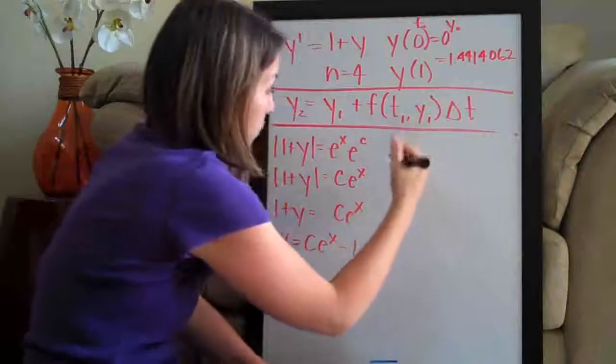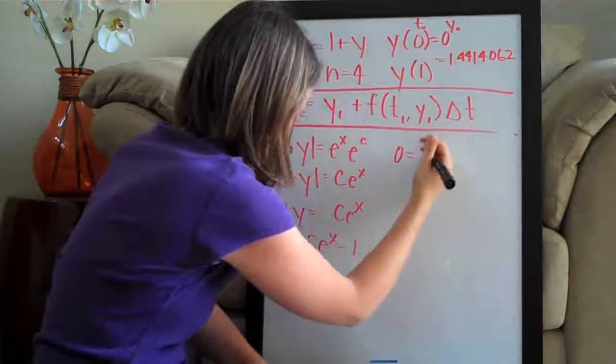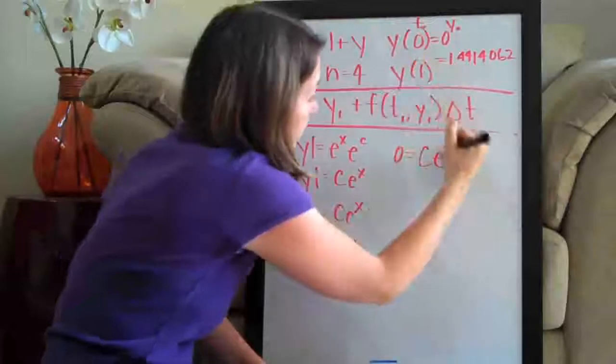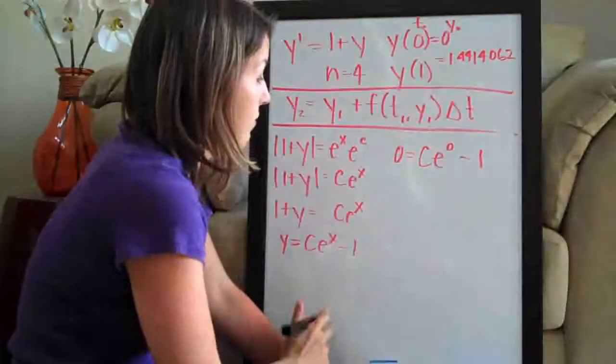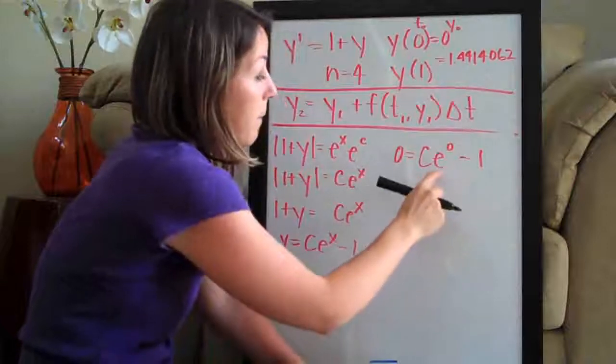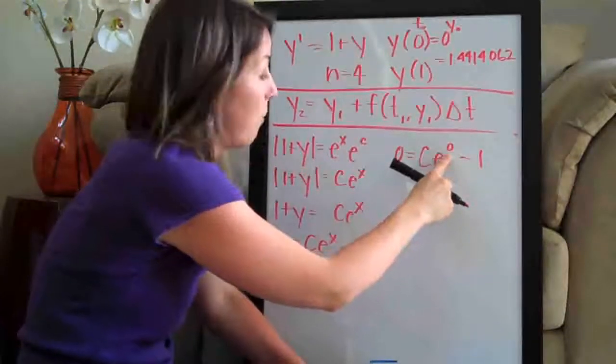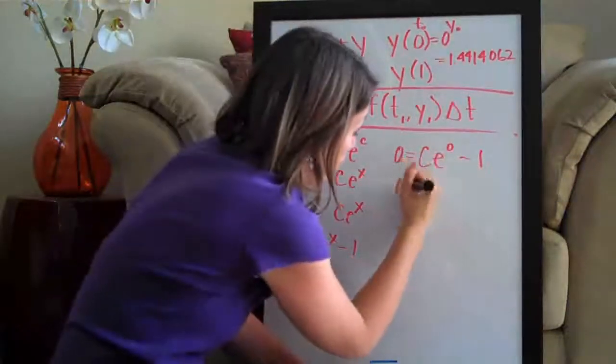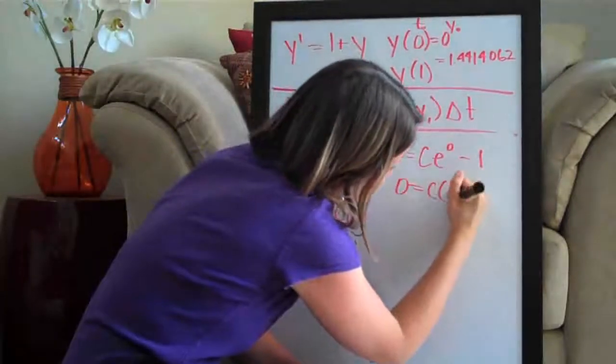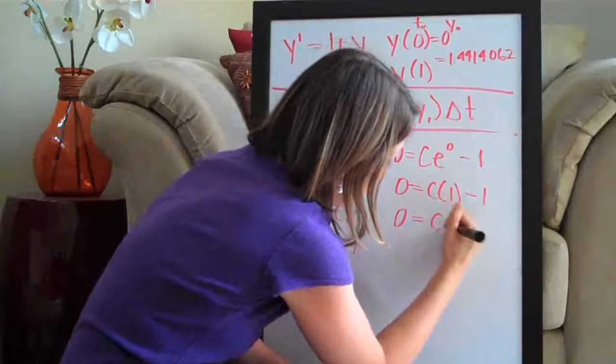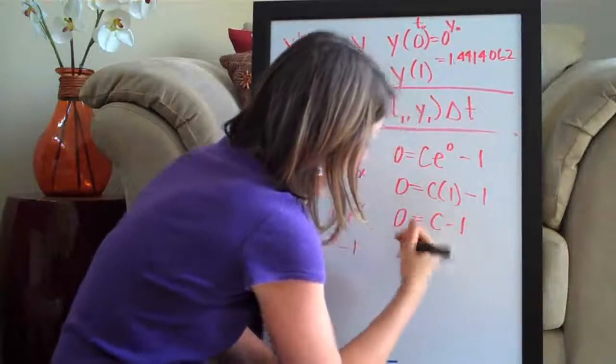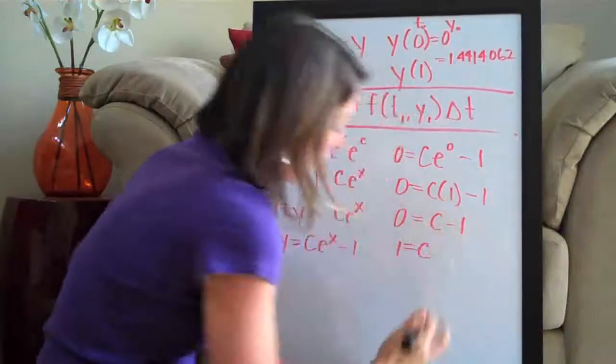So we're plugging in 0 for y and then we have c e and we're plugging in 0 for x so e to the 0 minus 1. So we have to solve for c. Anything raised to the 0 power is simply 1 so we have 0 equals c times 1 minus 1. 0 equals c minus 1 so then we add 1 to both sides and we get 1 equals c.